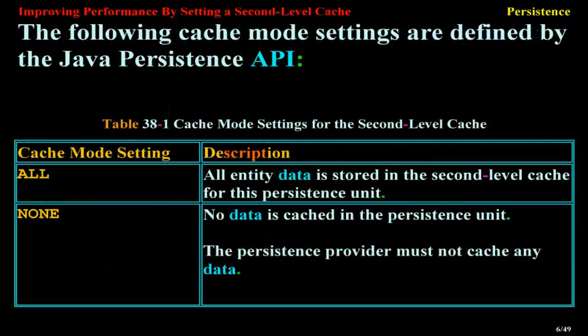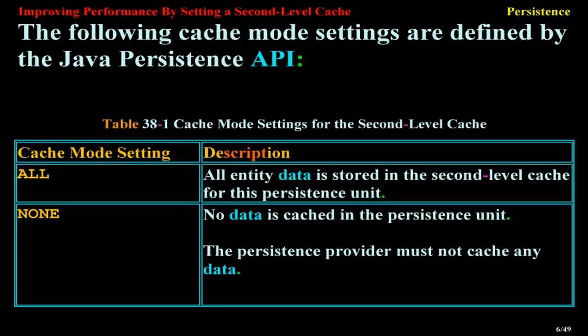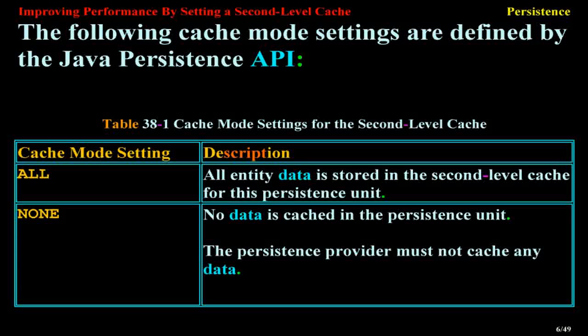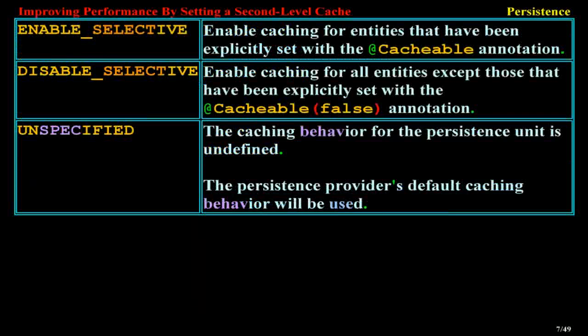The following cache mode settings are defined by the Java Persistence API. Table 38-1: Cache Mode Settings. ALL — all entity data is stored in the second-level cache for this Persistence Unit. NONE — no data is cached; the Persistence Provider must not cache any data. ENABLE_SELECTIVE — enable caching for entities explicitly annotated with a Cacheable annotation. DISABLE_SELECTIVE — enable caching for all entities except those explicitly set with a Cacheable false annotation. UNSPECIFIED — the caching behavior for the Persistence Unit is undefined.